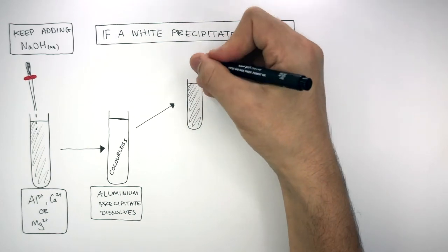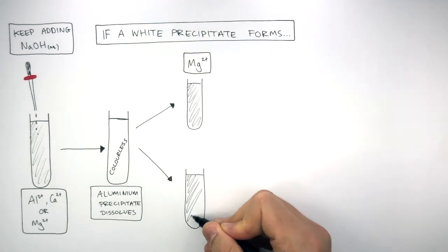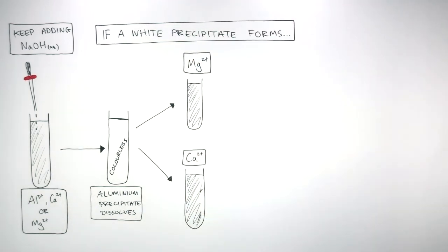If it doesn't become colourless, then it could be either magnesium or calcium in that solution. This is because the magnesium and calcium ions do not dissolve when we keep on adding sodium hydroxide solution. To then differentiate between the magnesium and calcium ions, we do a flame test to both.